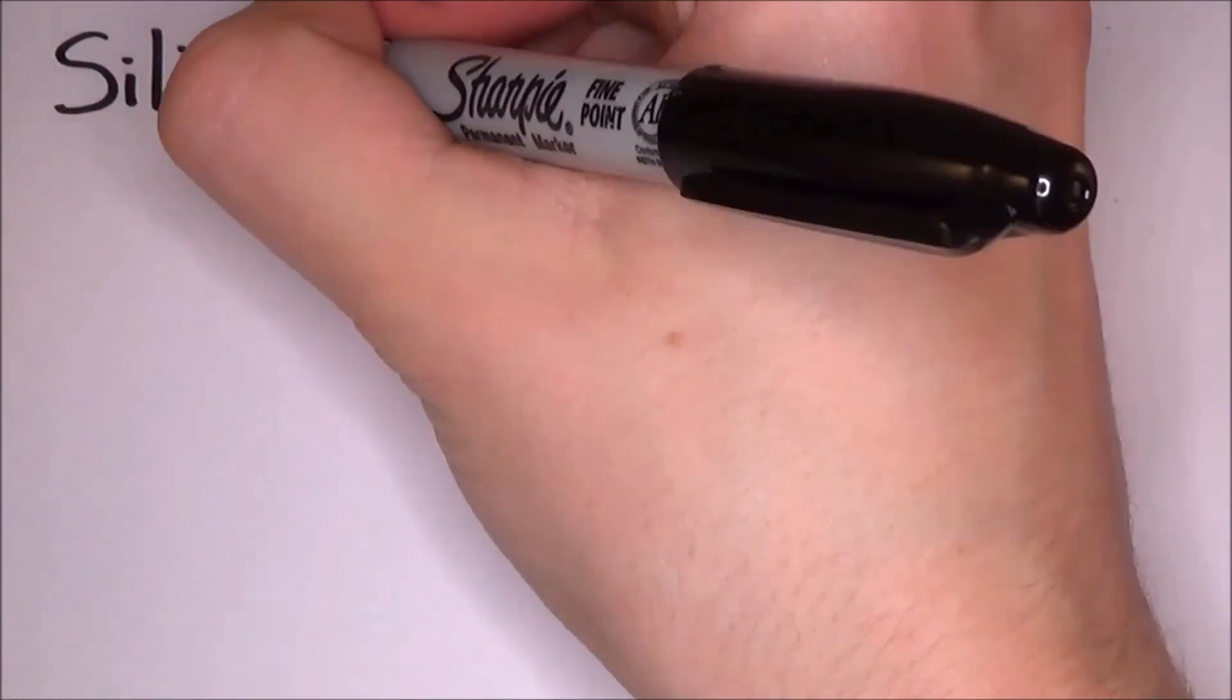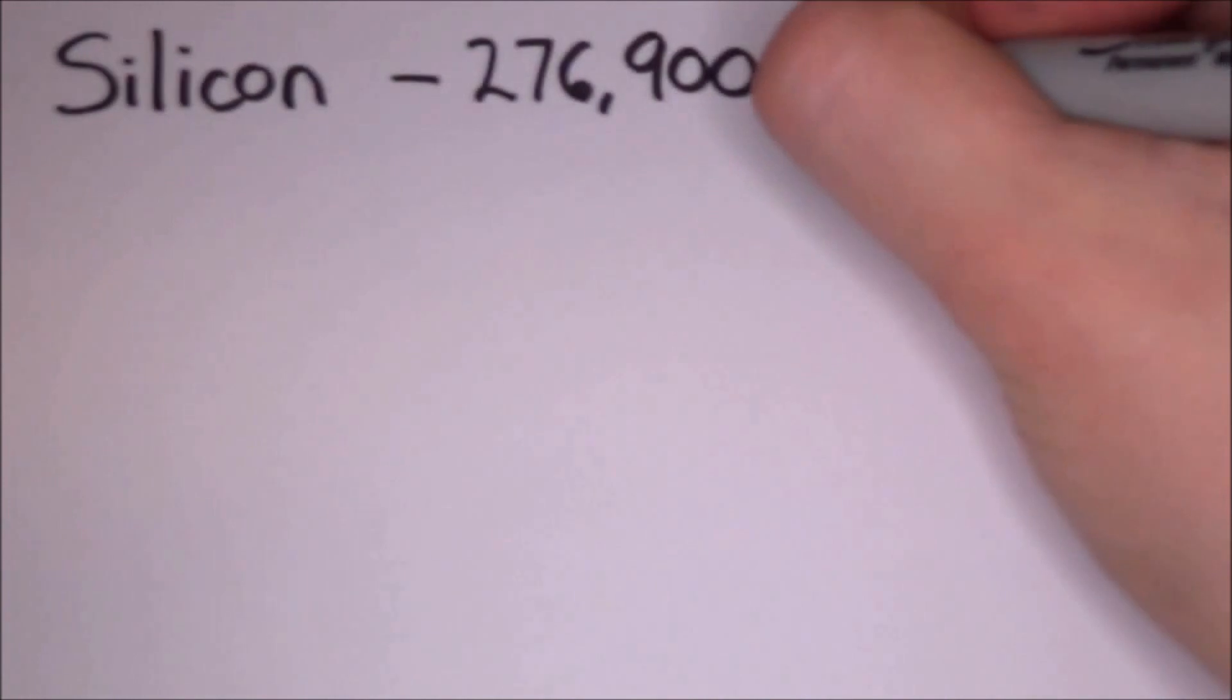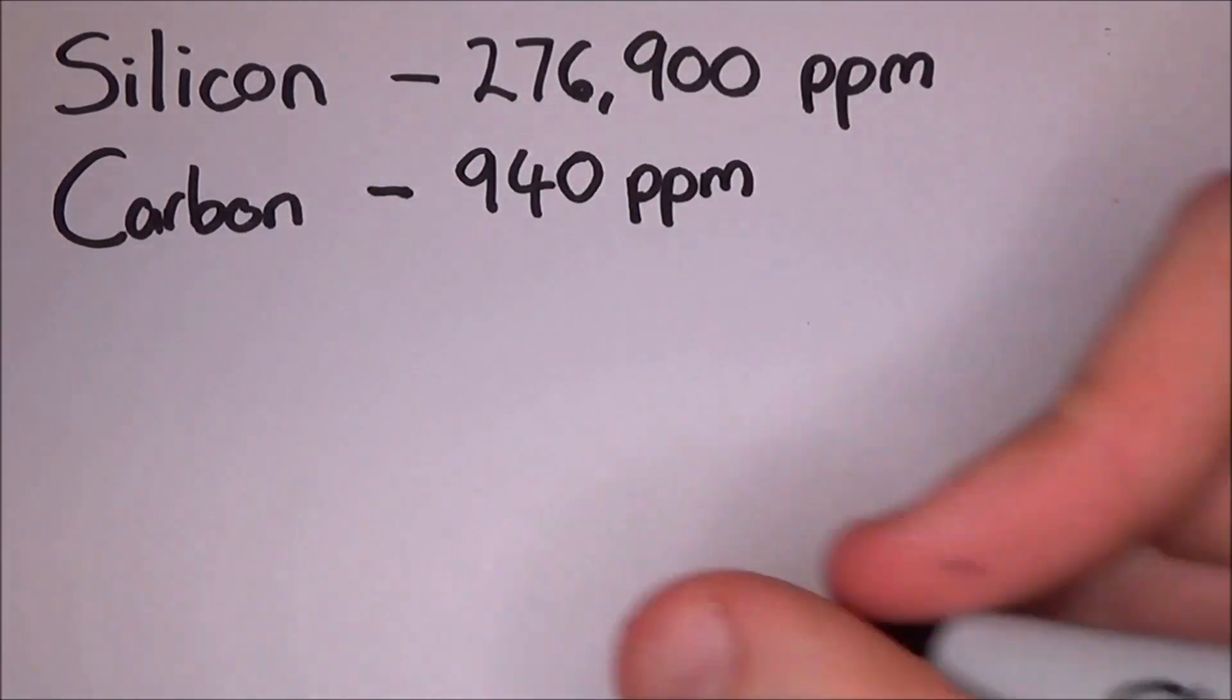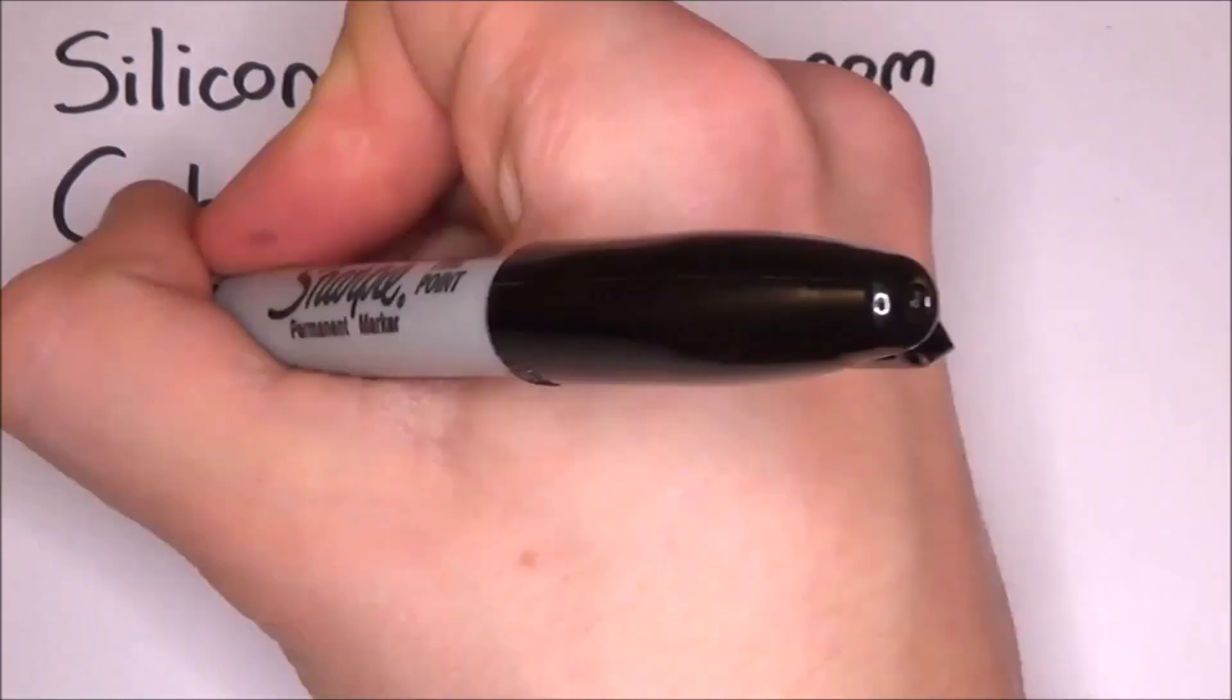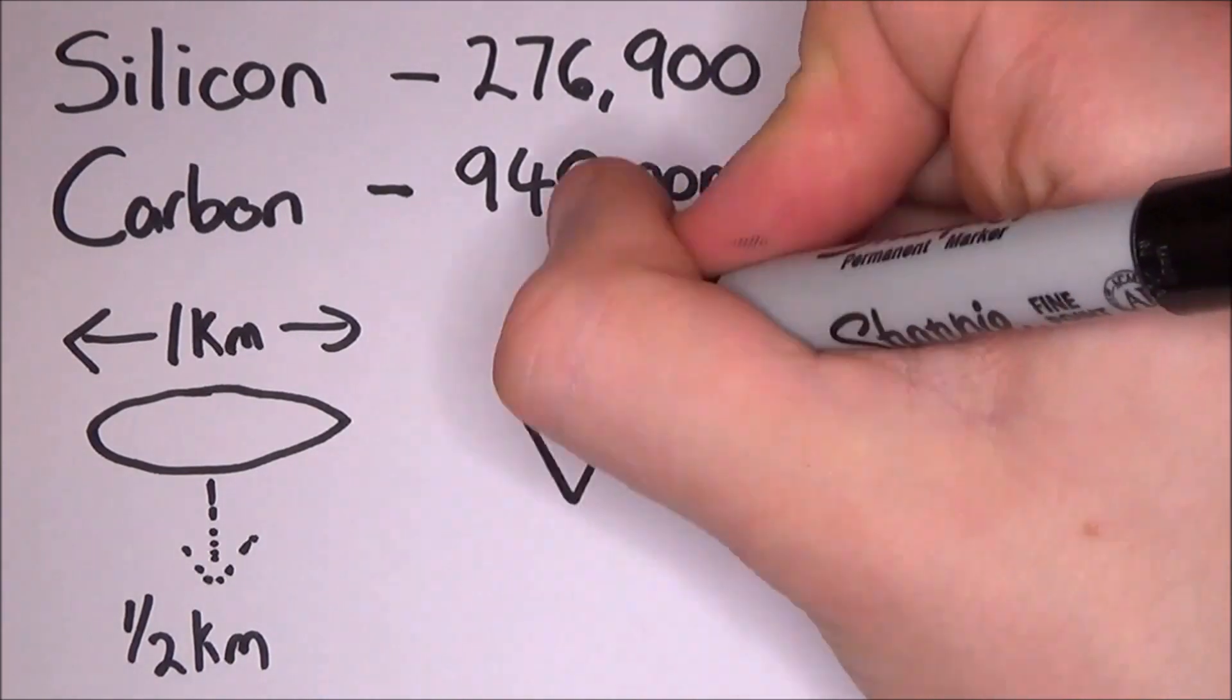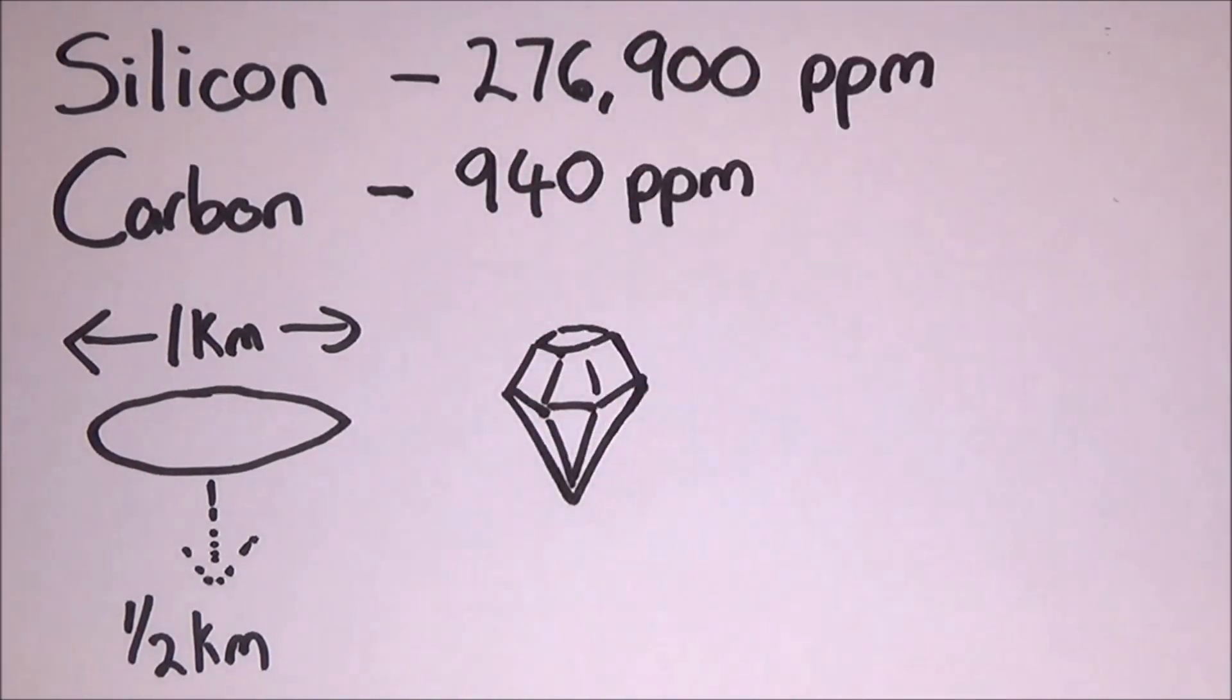While silicon is the second most abundant element in the earth's crust, carbon is the 15th, but it is still pretty common, and we have dug some of the world's largest holes in the name of carbon. Holes that are up to a kilometer across and half a kilometer deep, all because carbon is diamond.